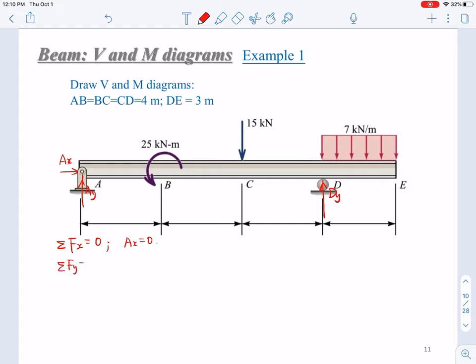And ΣFy equals zero. So from this, we know that Ay plus Dy equals 15 plus seven times 3, which is the distributed load.